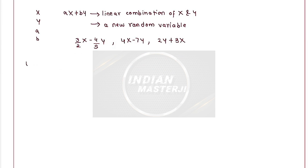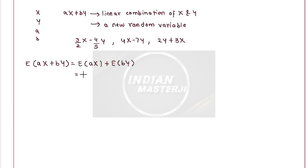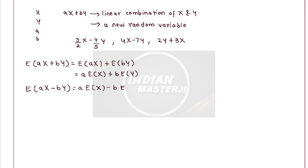Now if I have to find out the mean of ax plus by, we have already studied how to find the mean of a linear function of a random variable x — the same concept we will apply here. The mean of ax plus by will be equal to mean of ax plus mean of by, which in turn is a times E(x) plus b times E(y). Similarly, the mean of ax minus by is a times mean of x minus b times mean of y.